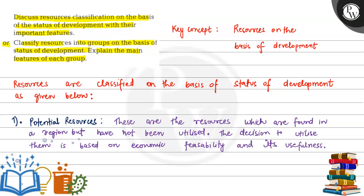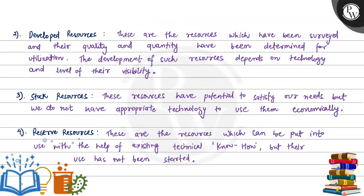Resources on the basis of development are classified as given below. They are classified into four types: potential resources, developed resources, stock resources, and reserve resources.